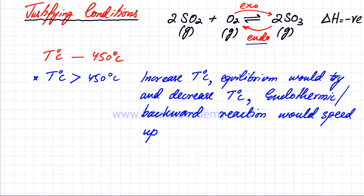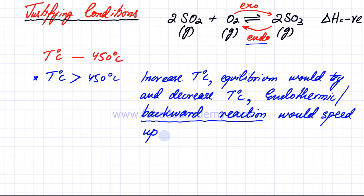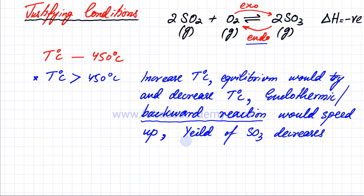When I say the backward reaction would speed up or be favoured, that means it would be faster compared to the forward reaction. So if the backward reaction speeds up, the reverse reaction is happening at a faster pace — you'll get less SO3. The yield of SO3 decreases, hence it's not suitable to increase temperature beyond a certain point. The optimum point in our case is 450 degrees centigrade.